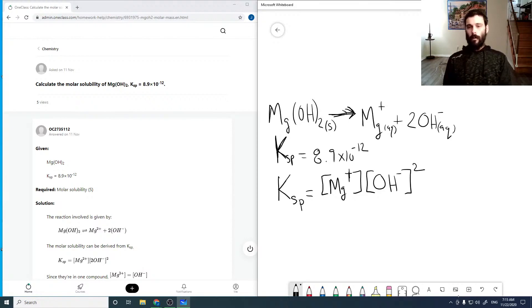So in this case, there's no denominator because there's only a solid on the reactant side. So our Ksp is just equal to these concentrations.